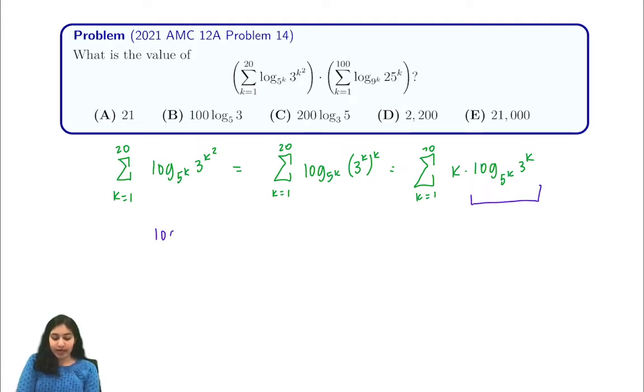Let's let this be a. That means that we have 5 to the k to the power of a is equal to 3 to the k. Now we can simplify this and we can write 5 to the power of k times a is equal to 3 to the k. Now if we take the kth root of both sides we'll see that 5 to the power of a is equal to 3. So now if you take log base 5, we'll see that a is just equal to log base 5 of 3.